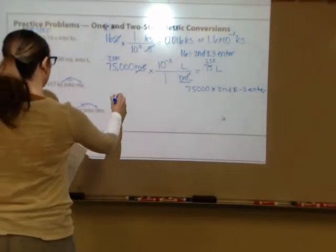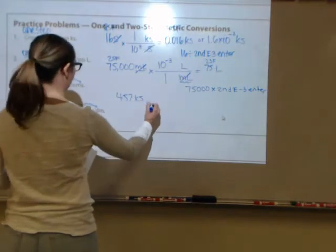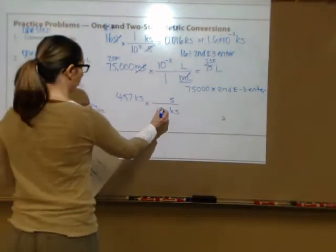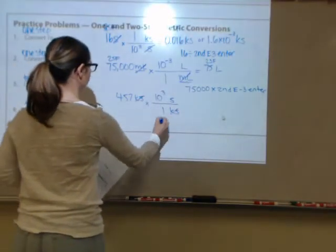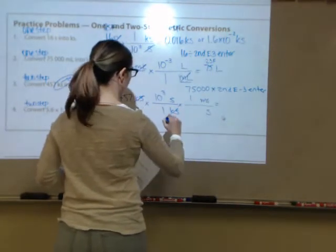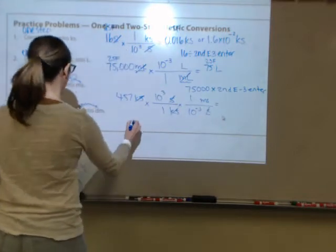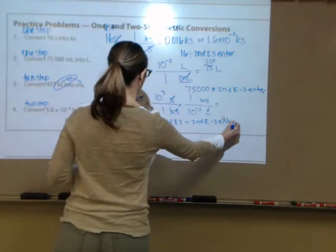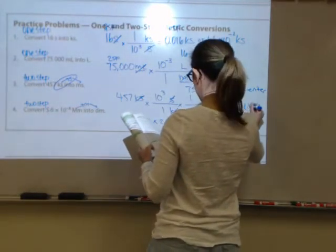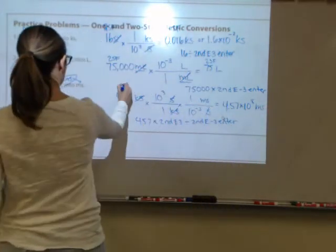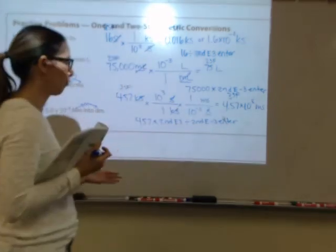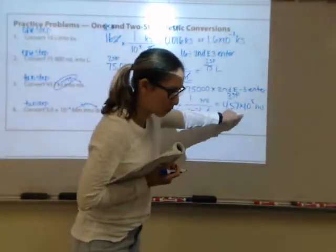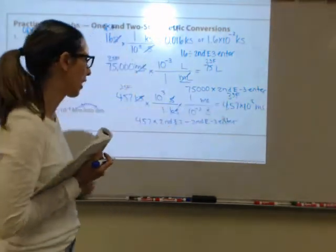Number three: 457 kiloseconds to milliseconds — prefix to prefix, two-step. First convert kiloseconds to seconds: number one next to kilo, kilo is 10³. Then convert seconds to milliseconds: number one next to milli, milli is 10⁻³. Calculator: 457 × 2nd EE 3 ÷ 2nd EE negative 3 = 4.57 × 10⁸ milliseconds. Three sig figs in, three sig figs out. Note: if your calculator shows 4.57e8, do not write 'e' on paper — it means times 10 to that exponent power.